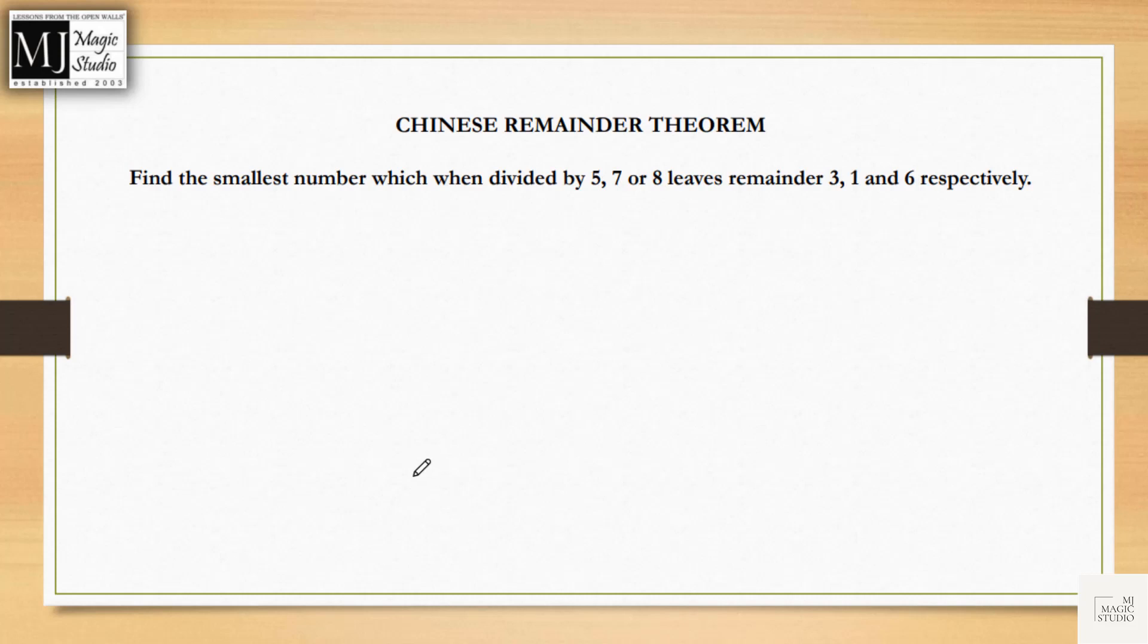Chinese Remainder Theorem - where to use? Suppose the question is find the smallest number which when divided by 5, 7 or 8 leaves remainder 1 in all cases. We know the drill for this. Just find the LCM of the divisors and add the common remainder to it. 5 into 7 is 35, into 8 is 280. Our answer would be simply 280 plus 1, that is 281.